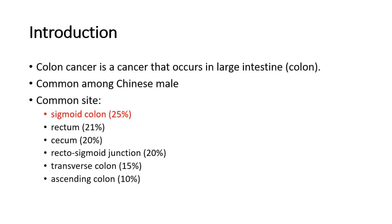It is common among Chinese and more common in males compared to females. The most common site of colon cancer is at the sigmoid colon, where it consists of 25% of all the cases. Other possible sites are the rectum, rectal sigmoid junction, transverse colon, and ascending colon — so anywhere in the colon it can occur.